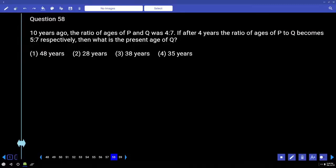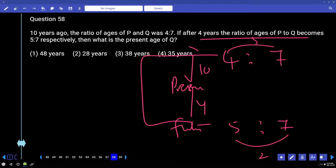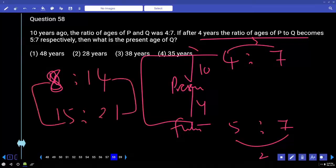10 years ago, the ratio of age of P and Q was 4 is to 7. This is 10 years ago. After 4 years in the future, 5 is to 7. So what is the difference between these two periods? 10 years, 4 years, 14 years. Difference is 3. Difference is 2 parts. Multiply all the way. 2 into that ratio, 3 into this ratio. 8 is to 14. 15 is to 21. 7 parts, 7 parts. That 7 parts is nothing but 14 years. Each part, 2 years. Then what is the present age of Q?